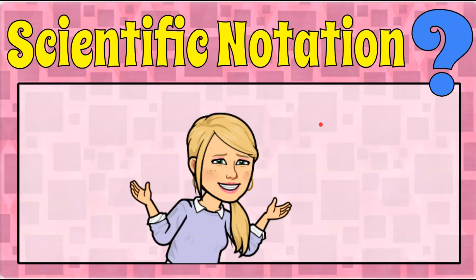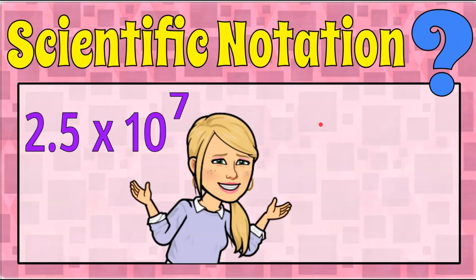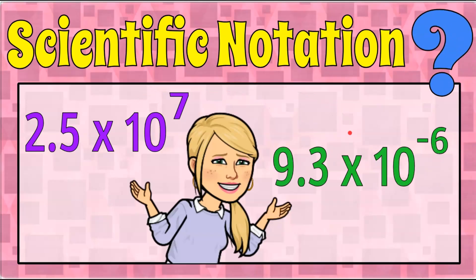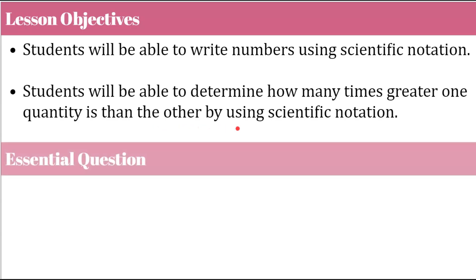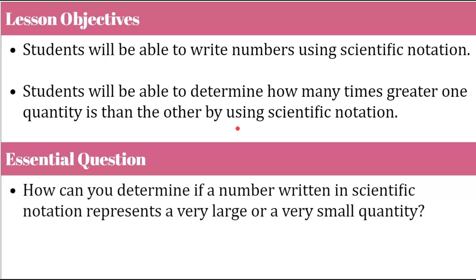It's the Magic of Math here, and today we're talking scientific notation, which we use to represent really large numbers or really small numbers. Here are our objectives for the lesson today. You the student will be able to write numbers using scientific notation. You will also be able to determine how many times greater one quantity is than the other by using scientific notation. The question to think about today: how can you determine if a number written in scientific notation represents a very large or a very small quantity?